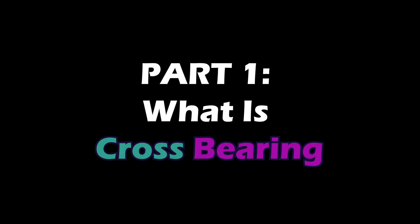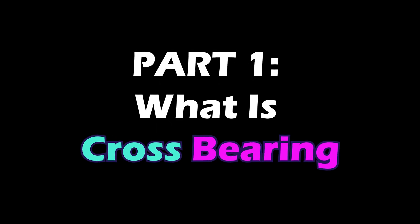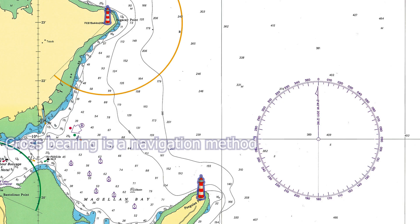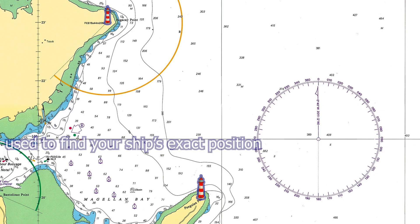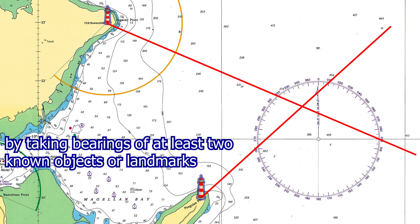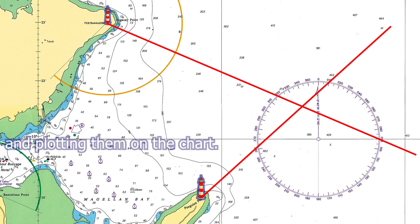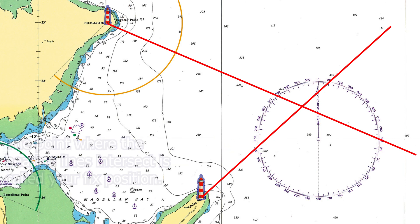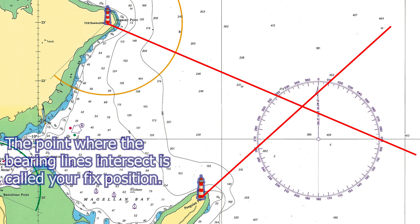What is cross bearing? Cross bearing is a navigation method used to find your ship's exact position by taking bearings of at least two known objects or landmarks and plotting them on the chart. The point where the bearing lines intersect is called your fixed position.